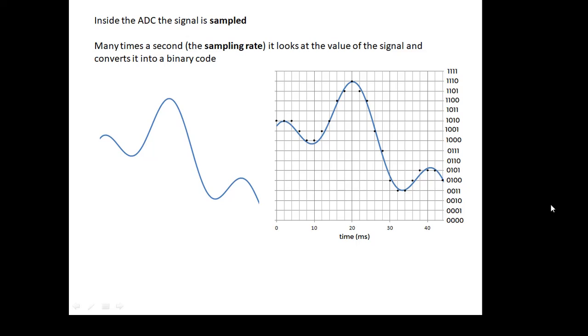Many times a second, the machine looks at the value of the voltage. It looks at the value of the voltage and changes it into a binary code. So if you look at the graph here, many times a second, the level of the voltage is converted into a binary code and you end up with a binary signal.